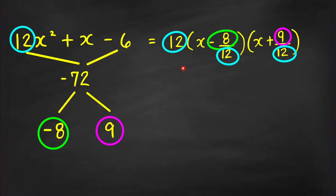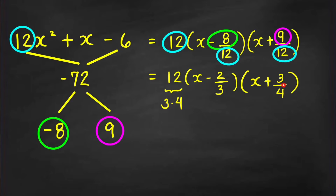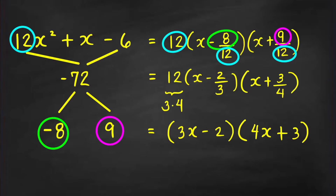This is not yet the final answer, because factors must have integer coefficients. Simplify the fractions: 8/12 = 2/3 and 9/12 = 3/4. To make them integers, write 12 = 3 × 4. Distribute the 3 to the factor (x - 2/3) to get (3x - 2), and distribute the 4 to (x + 3/4) to get (4x + 3). The correct factorization is (3x - 2)(4x + 3).